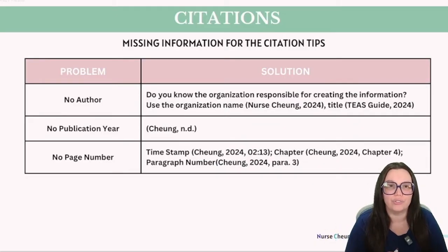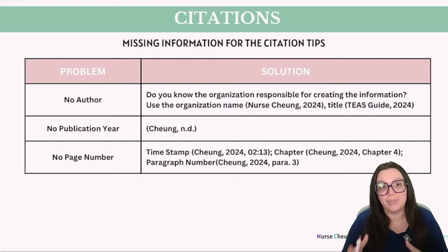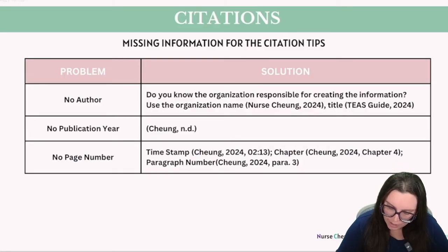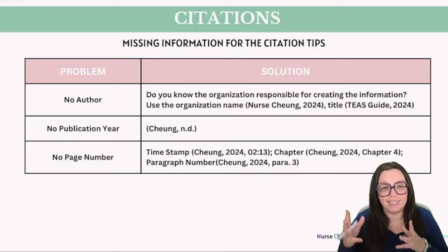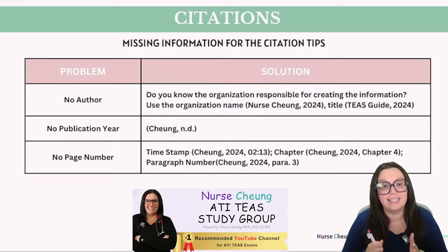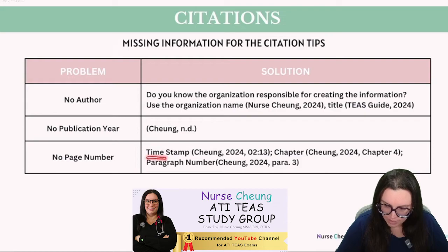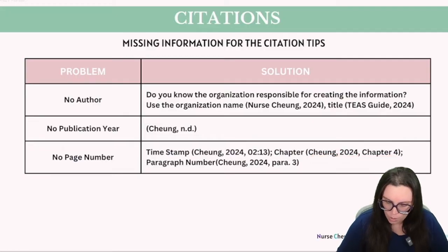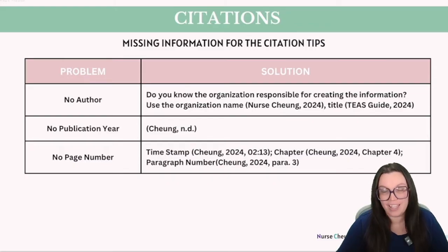When dealing with sources that lack certain crucial details, here's how to navigate that situation. If the author's name is missing but the responsible organization is known, use that — for instance, Nurse Chung, 2024. If only the title is known, use it: TEAS Guide, 2024. If the source lacks a publication year, use 'n.d.' to indicate no date available. For direct quotes lacking a specific page number, use other identifiers: a timestamp (Chung, 2024, 20:13), a chapter (Chung, 2024, chapter 4), or a paragraph number (Chung, 2024, para. 3).